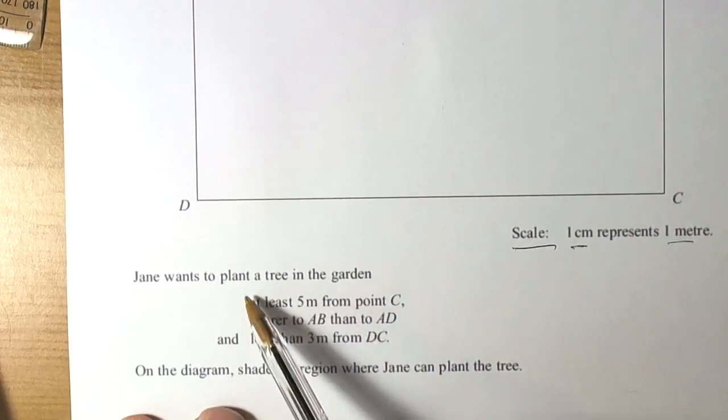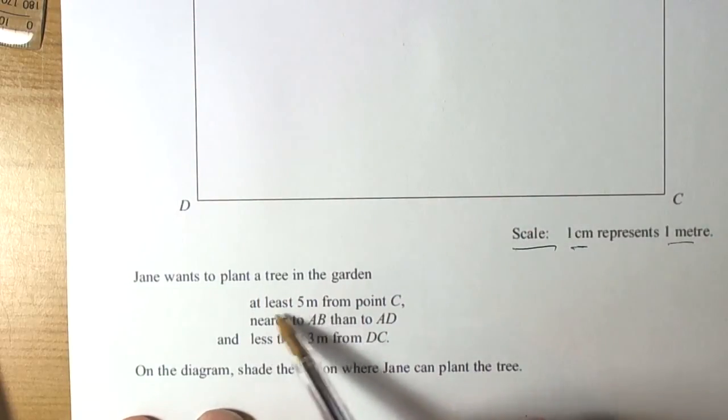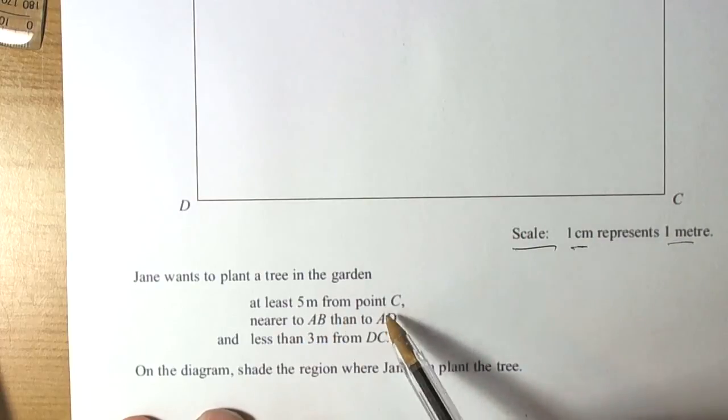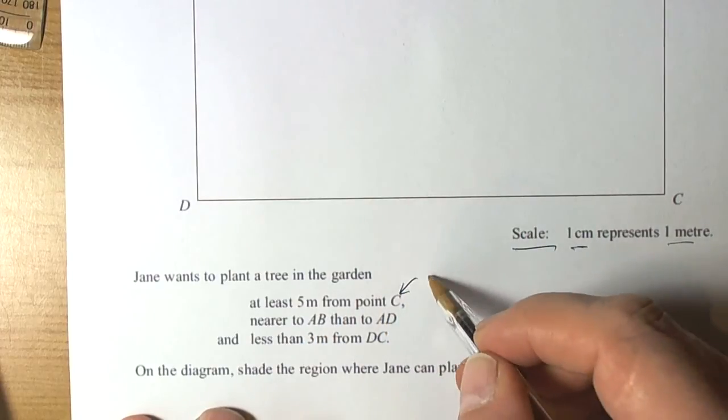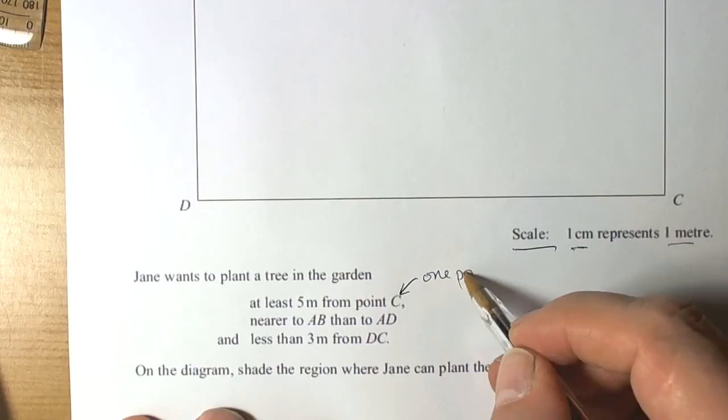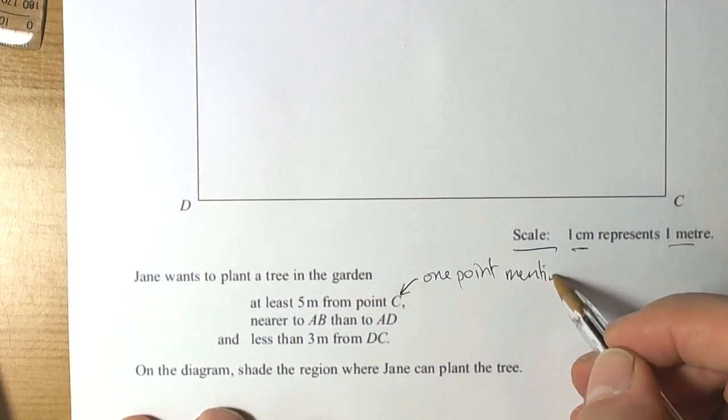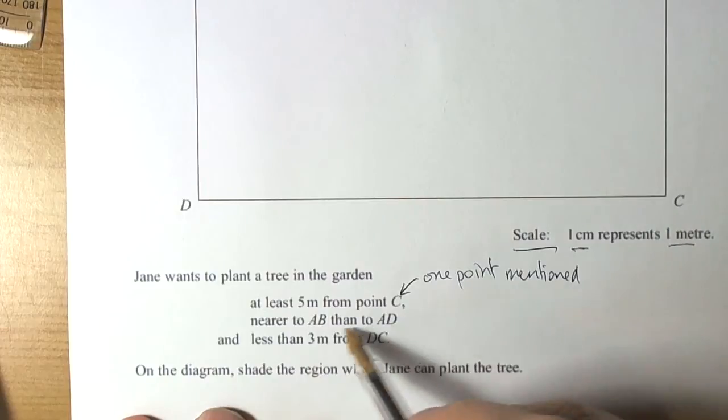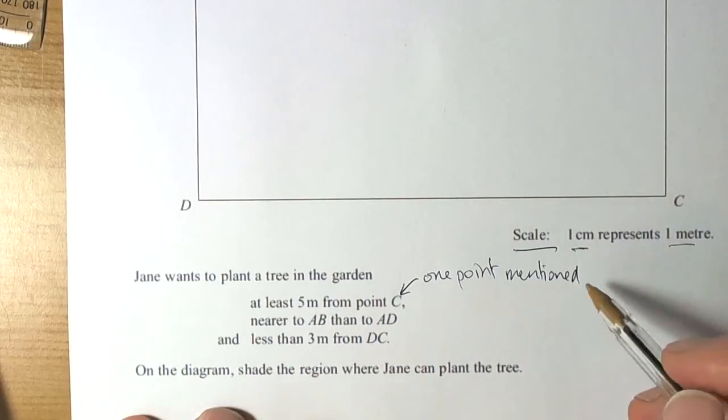The first part here says that the tree, so we're planting a tree in this garden, the tree has to be at least five metres from the point C. Now, the point C is just one point mentioned. When we get to the stage of recognising in a part of the question where they're saying one point is mentioned, then it's telling you to draw a circle.